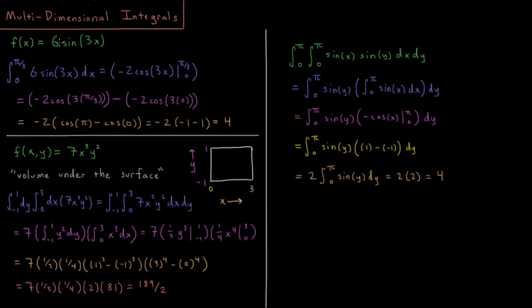We have f(x) = 6·sin(3x) and we want to compute the definite integral from zero to π/3. The integral of sine is negative cosine, but we have sin(3x) here.